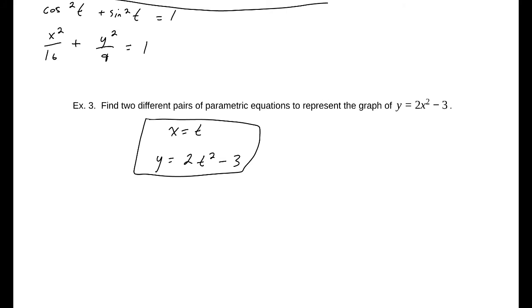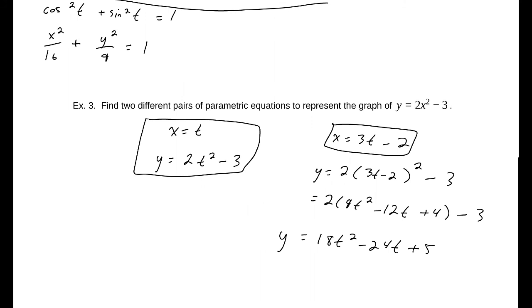For the second, we really aren't restricted by anything. I just went ahead and did something like this: 3t minus 2. If we take x equals 3t minus 2, let's substitute that into the other equation. That would be 2 times 3t minus 2 squared minus 3. That would be 9t squared minus 12t plus 4 minus 3. And we would have 18t squared minus 24t plus 5 once we combine those terms. These two together would be my set of parametric equations to represent that.